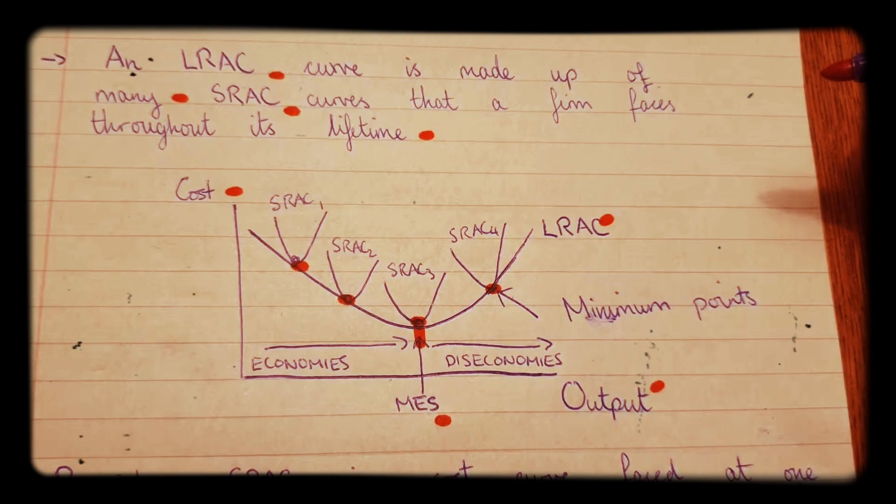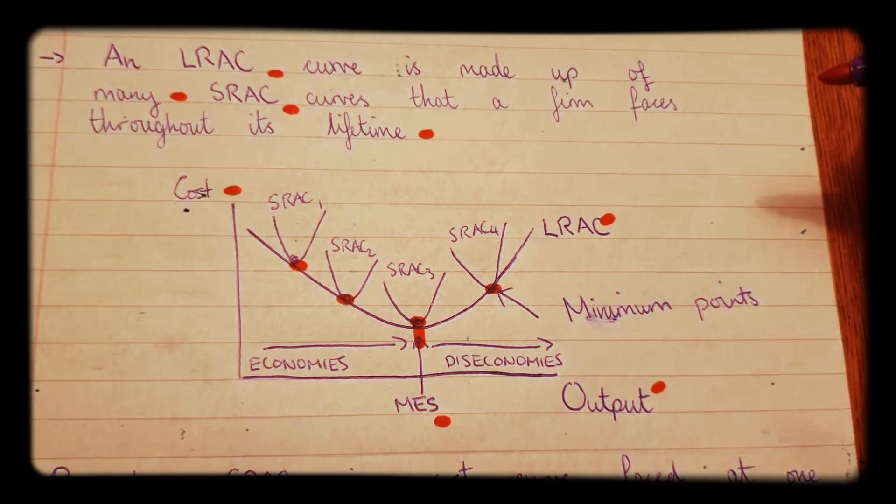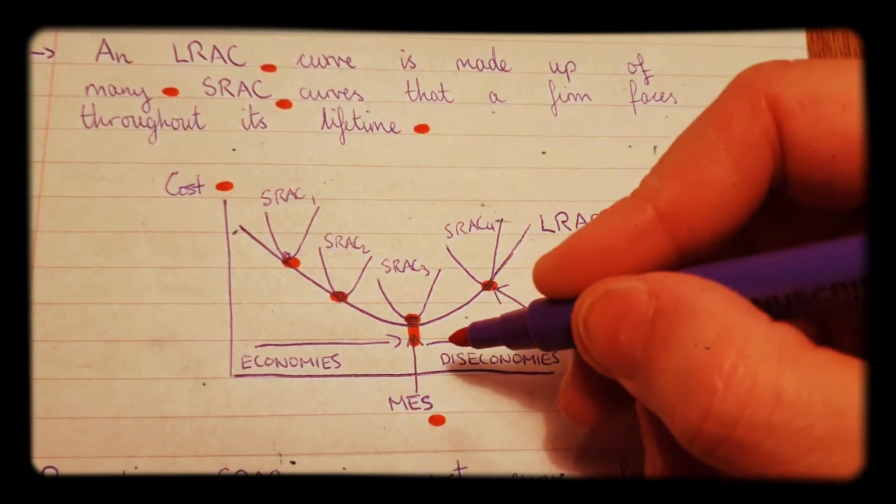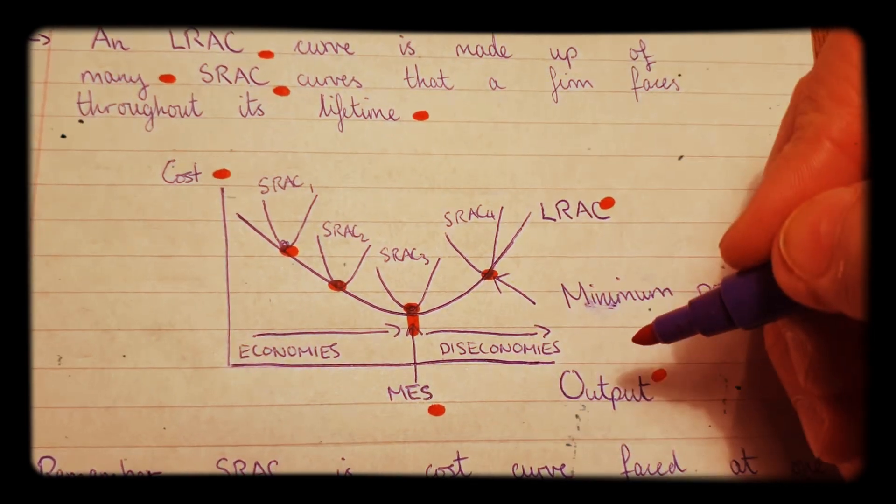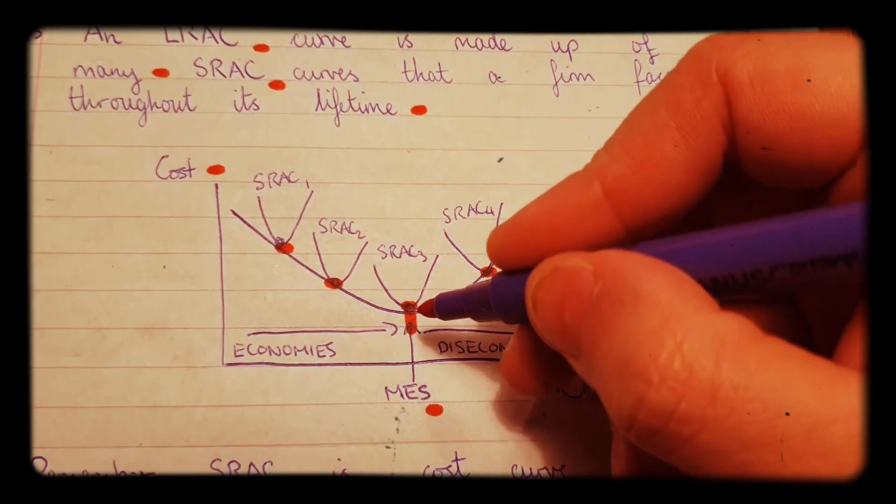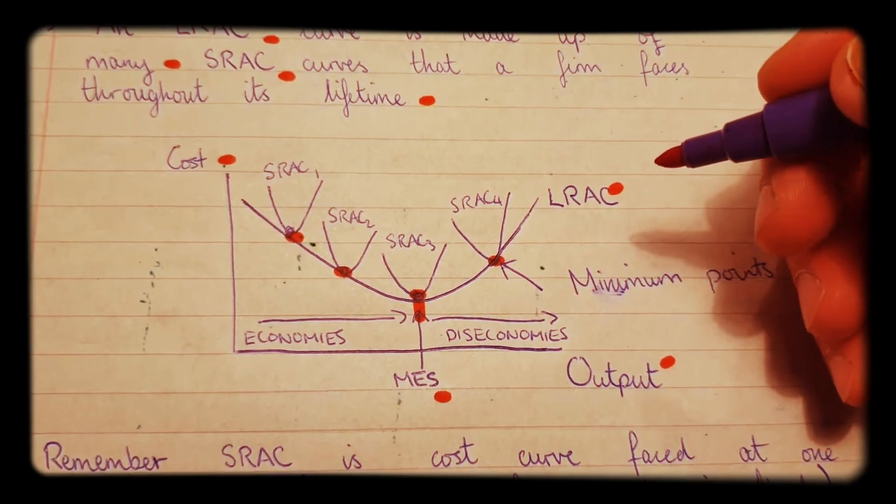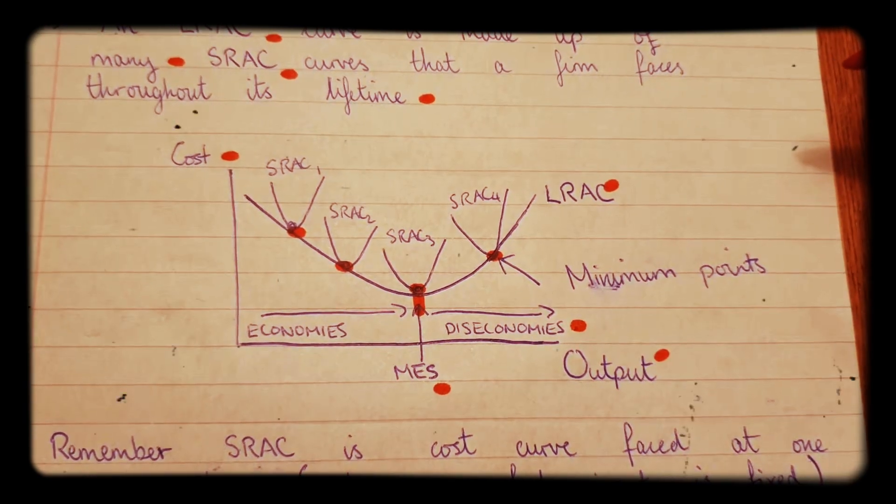And that is where the firm is most efficient in terms of its long run average costs. After this point, the firm grows in size. And as a result, costs start to go up, long run average costs start to go up. This is called diseconomies of scale.